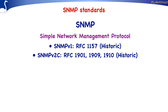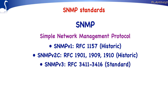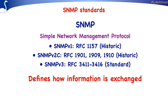SNMP version 2 remains in use primarily because of better efficiency compared to SNMP version 1. The third version, SNMP version 3, is defined in RFC 3411 through RFC 3416. These RFCs are all at standard level. New environments are encouraged to use SNMP version 3. The goal of the SNMP protocols is to define how management information should be exchanged over the network.